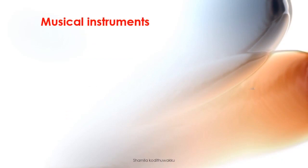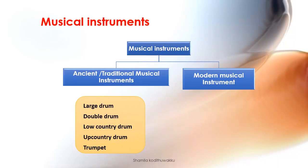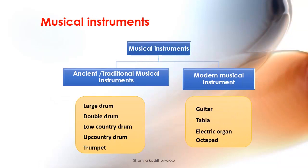Musical instruments can be divided into two parts: ancient or traditional musical instruments, and modern musical instruments. Examples of traditional instruments include large drum, double drum, low country drum, up country drum, and trumpet. Guitar, tabla, electric organ, and octopad are examples of modern musical instruments.